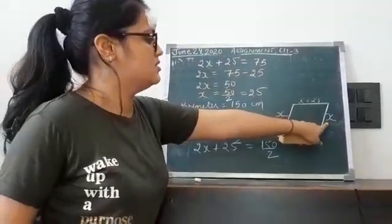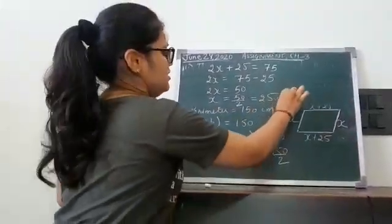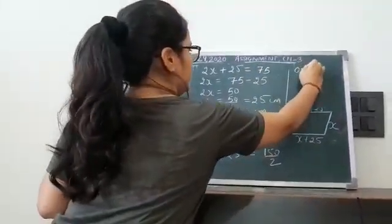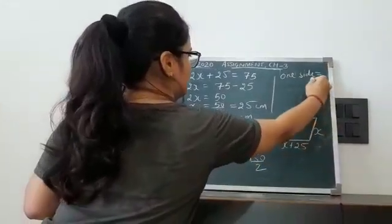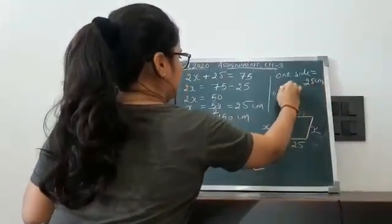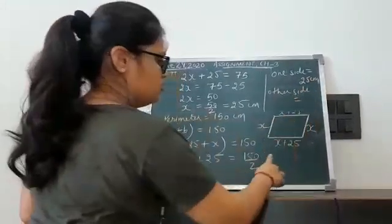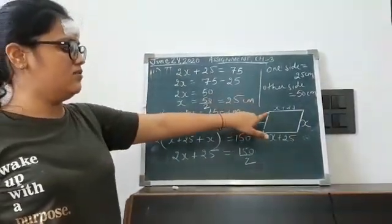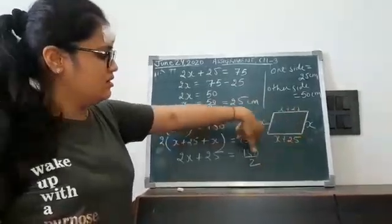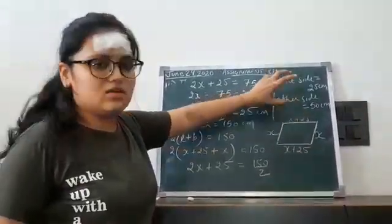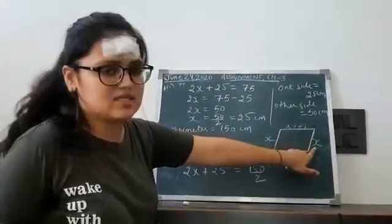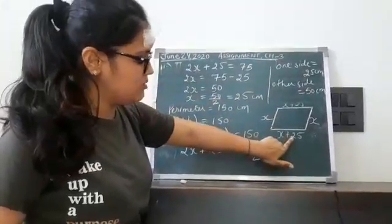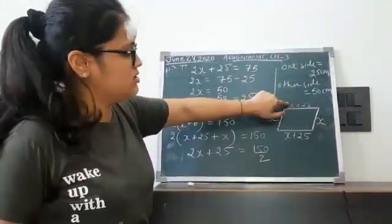The value of one side is 25 centimeters. The other side, which is x plus 25, equals 25 plus 25, so 50 centimeters. The question asks to find the measurements of all sides of the parallelogram. Two sides are 25 centimeters each, and the other two sides are 50 centimeters each.